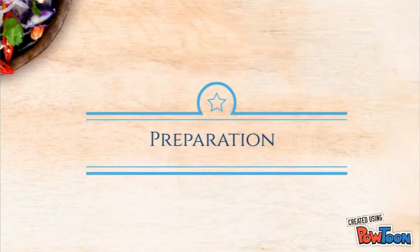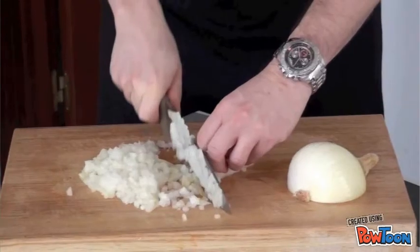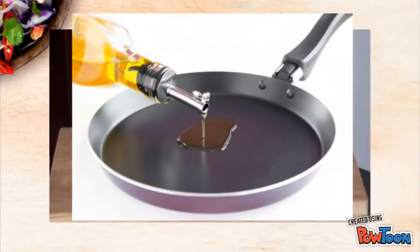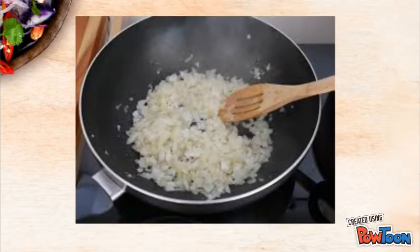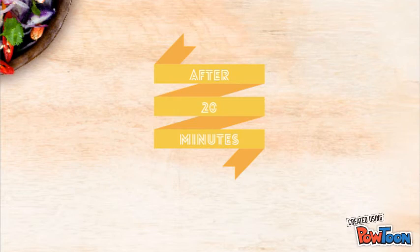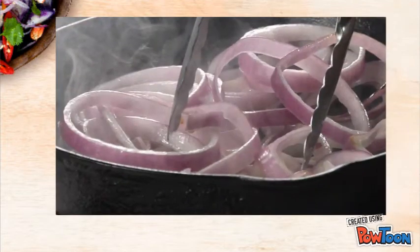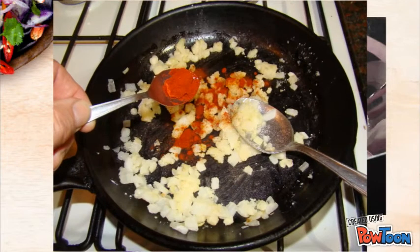Preparation. Step 1: Peel and coat the onion while heating 5 tablespoons of oil in a large pan, and add the onion when it starts to be hot. Step 2: After 20 minutes, remove the pan and add the paprika.